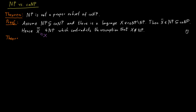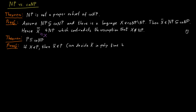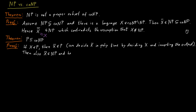The second thing we want to argue is that P is contained in co-NP. There are several ways of seeing this, but one easy way is to say that if a problem X is in P, then the complement of X is also in P, because we can solve it in polynomial time simply by solving X and then inverting the output. Since the complement of X is in P, it is in particular also in NP, but this means that X is in co-NP.